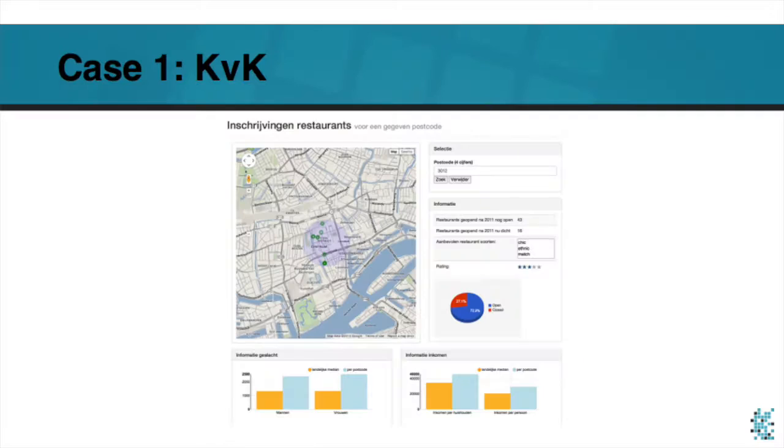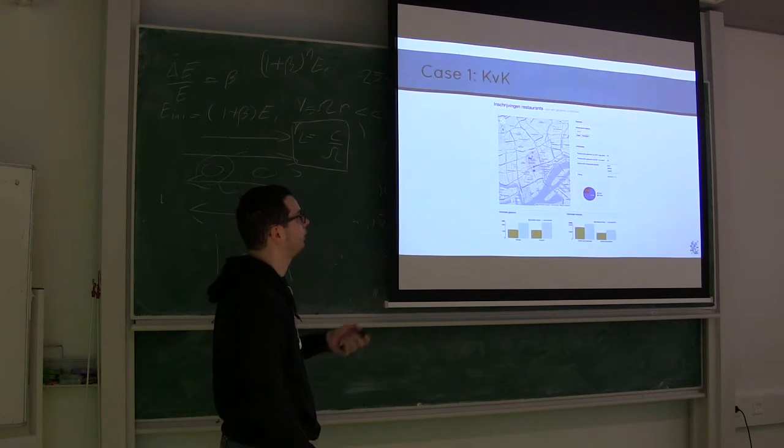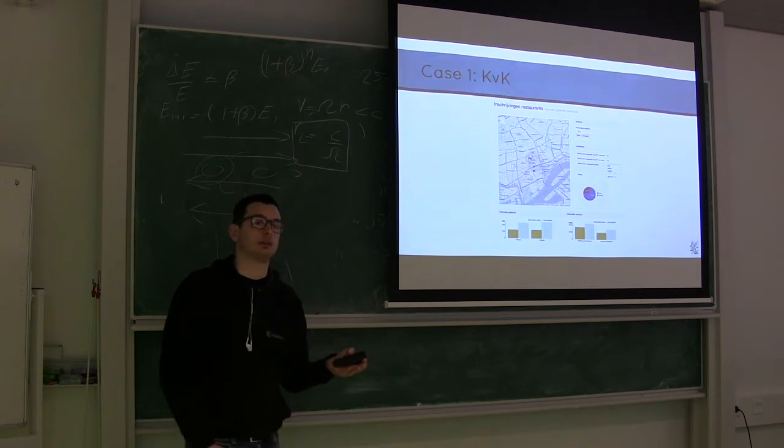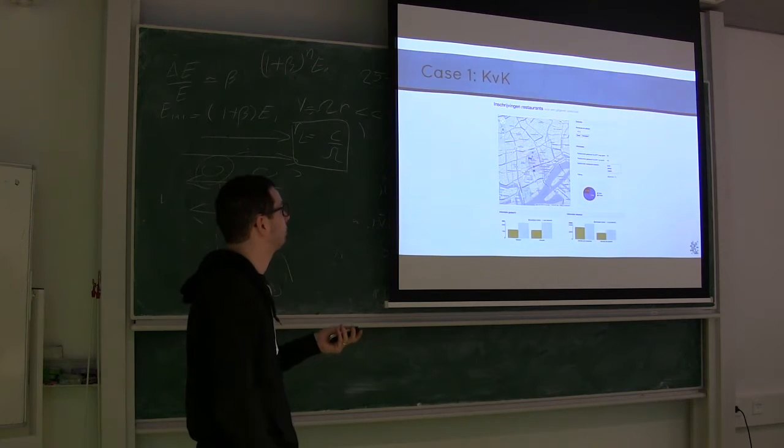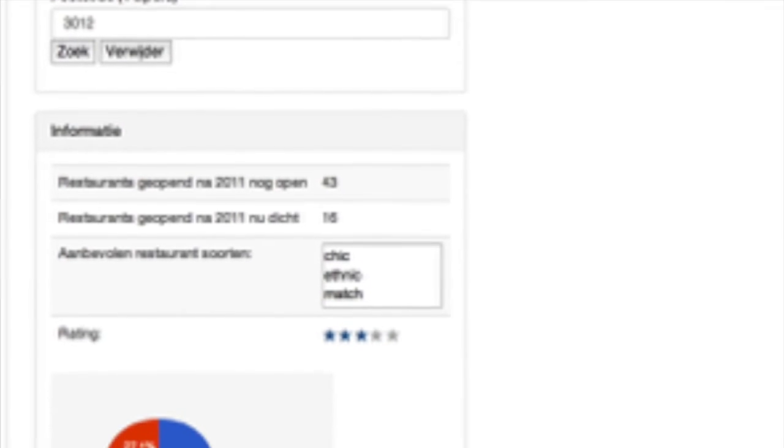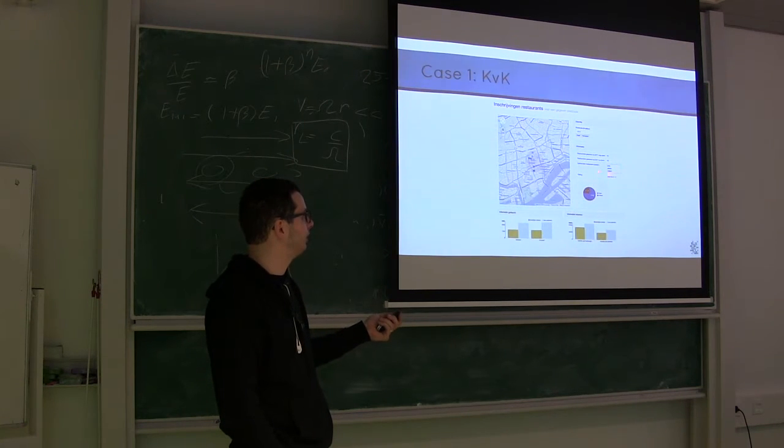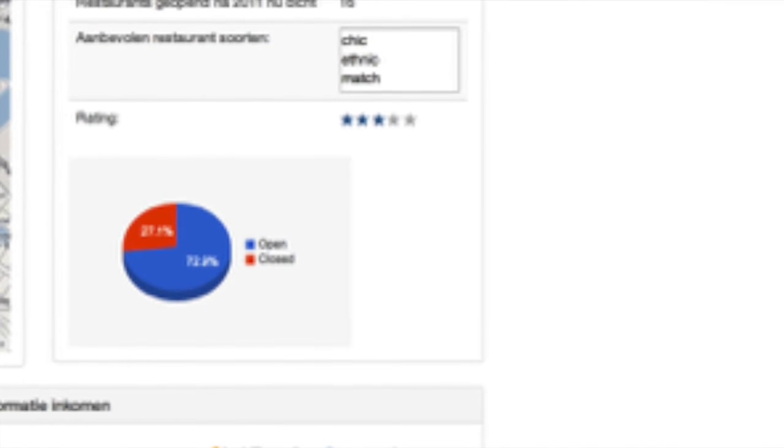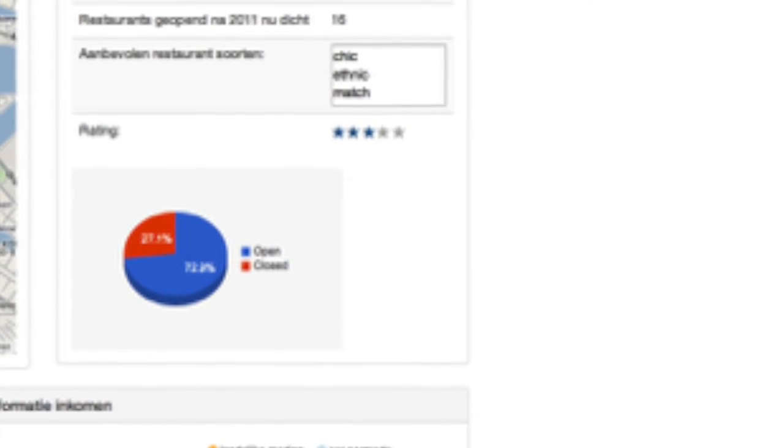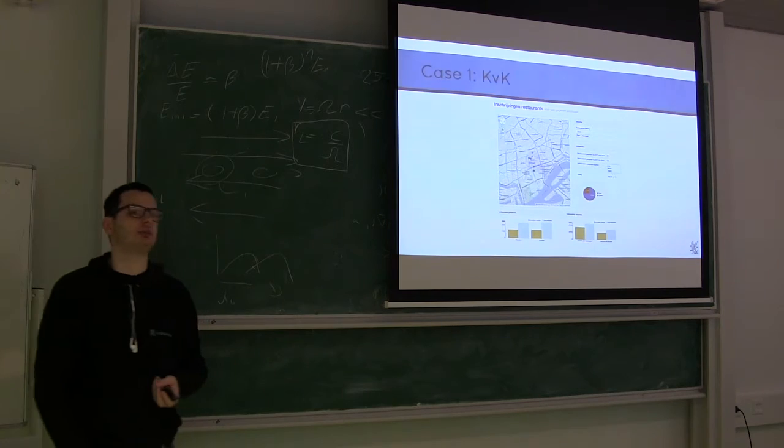So what we did, you as a future restaurant owner could use this portal and put on the postal code of where you wanted to open the restaurant. So one of the four-digit postal code here in the Netherlands. And the portal will tell you something like how many restaurants did open after 2011, how many did close after 2011. The recommendation for your restaurant, so I'm sorry you cannot see here, but it basically says if you're opening a restaurant here, you would either, it should be a chic or a high-end restaurant, or an ethnic restaurant, or a match restaurant. Match means for singles.